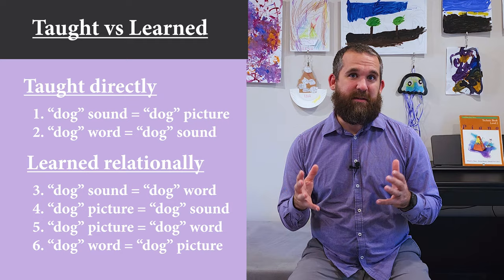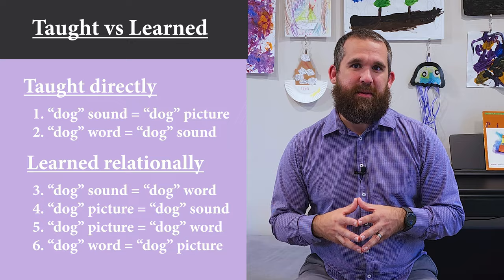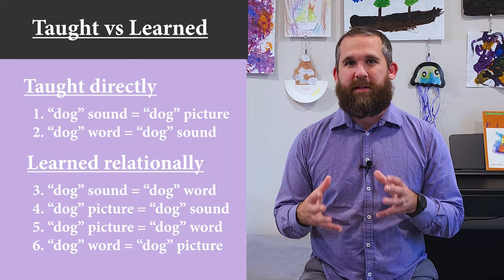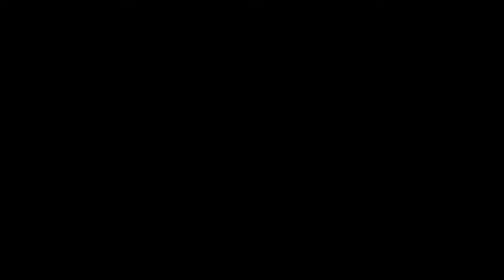Sidman also discovered that children could flip these learned connections and match the picture with the sound and the word with the sound without any extra learning — they did it on their own. At first they learned two basic connections, but then four other connections appeared by themselves, linking things that didn't seem to relate before. It might sound simple, but it caused quite a lot of excitement because existing theories couldn't explain it. The kids had no previous experience connecting different things, and there was nothing dog-like about the word 'dog,' so something unique was happening.